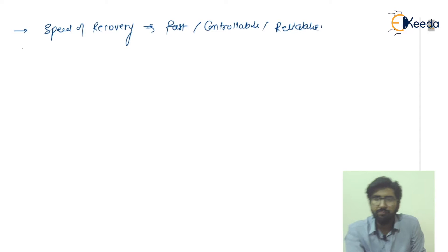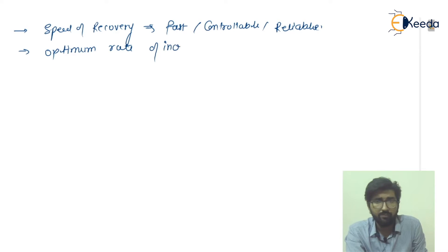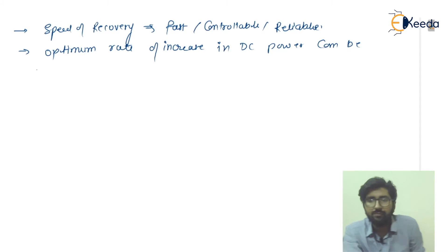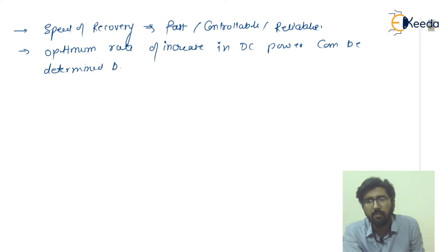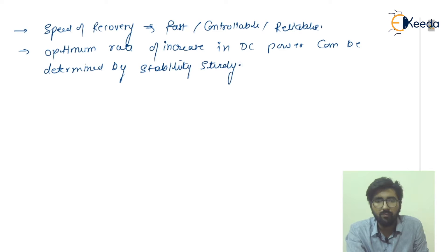The next point: the optimum rate of increase in DC power can be determined by stability study.